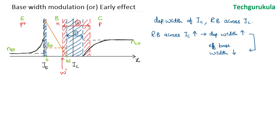Similarly, from that first point, if we reduce the reverse bias across the collector junction, the depletion width would reduce, which means the effective base width would increase. So, as the reverse bias across the collector junction is varied, the base width would vary — the base width gets modulated according to the collector junction reverse bias voltage. This is called base width modulation.